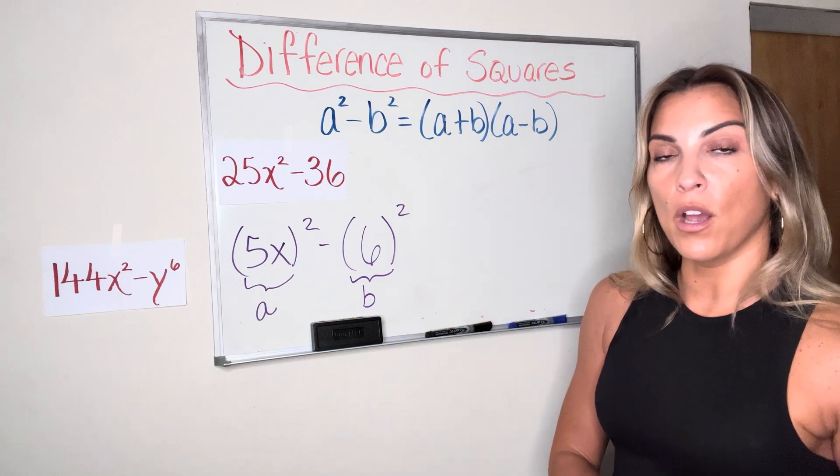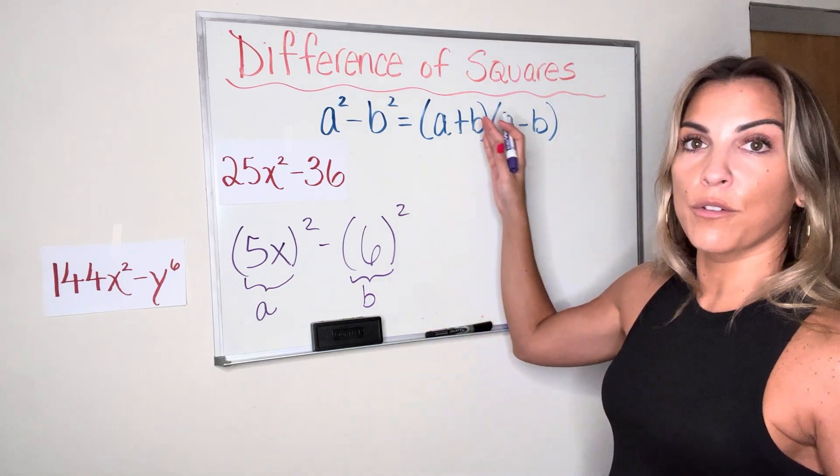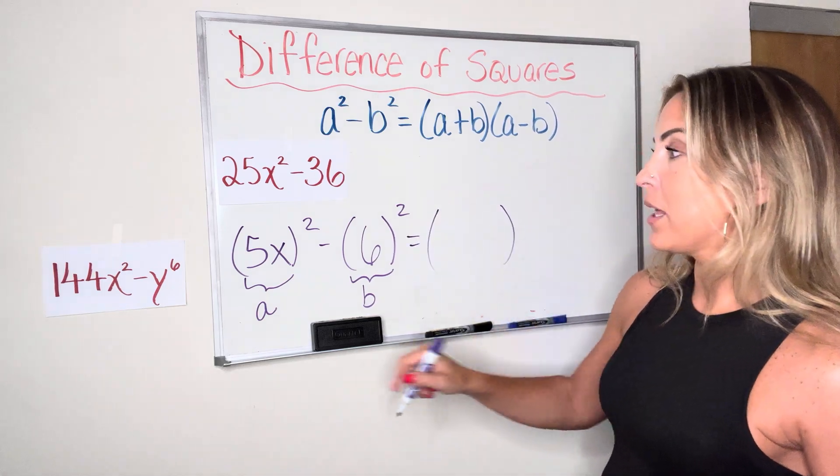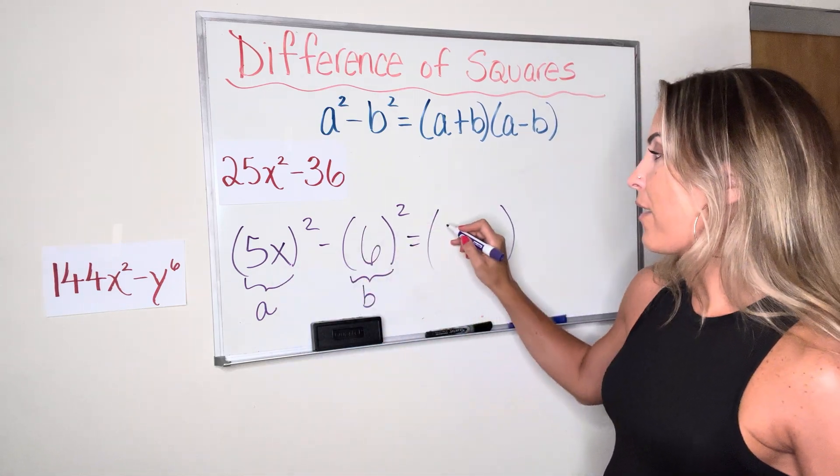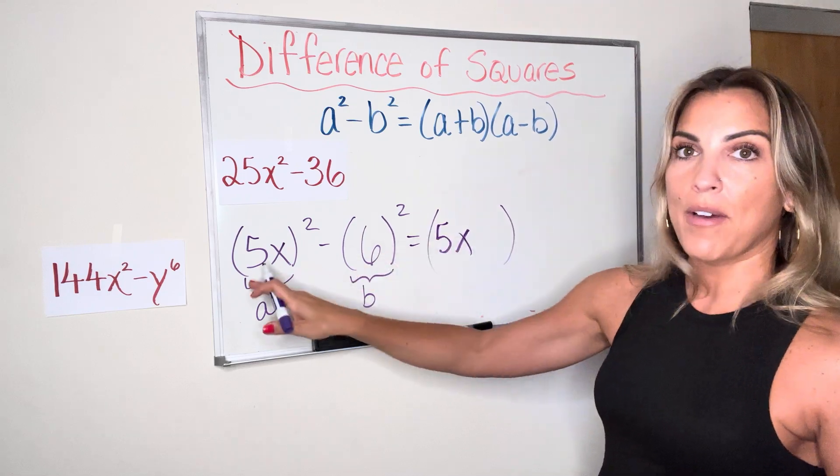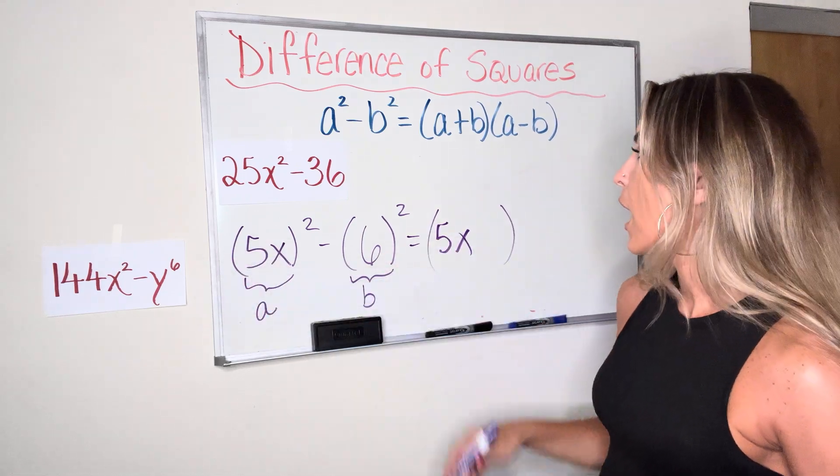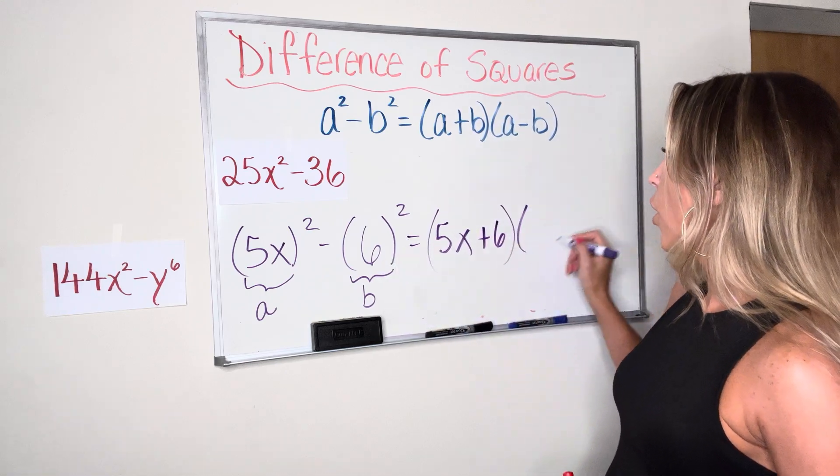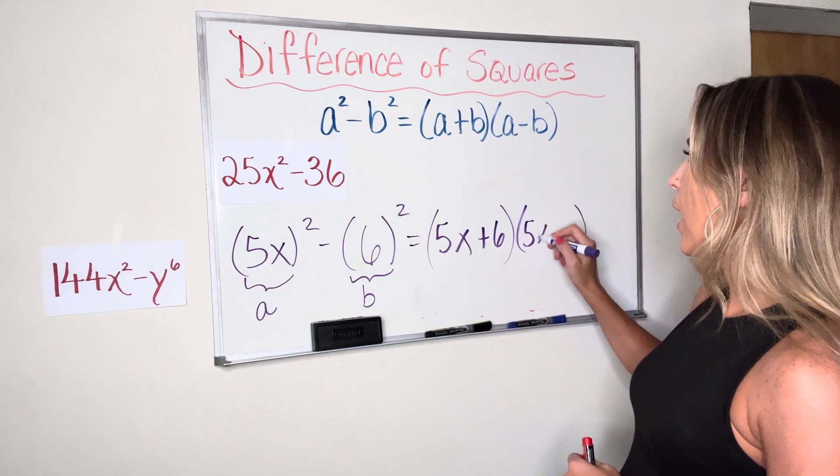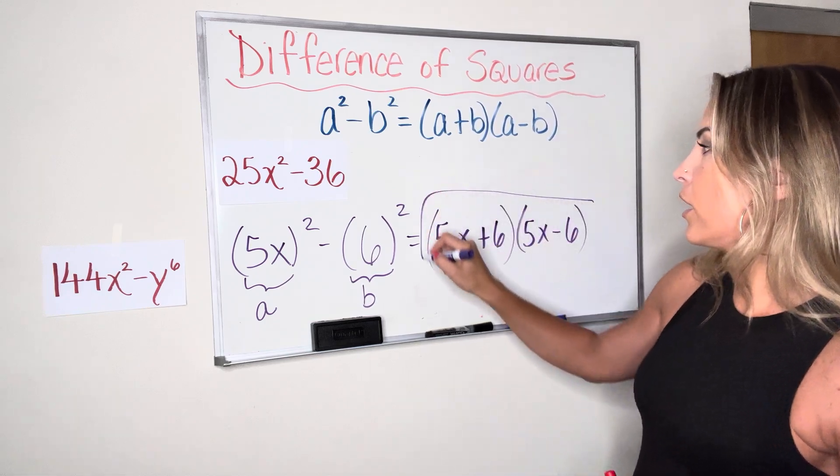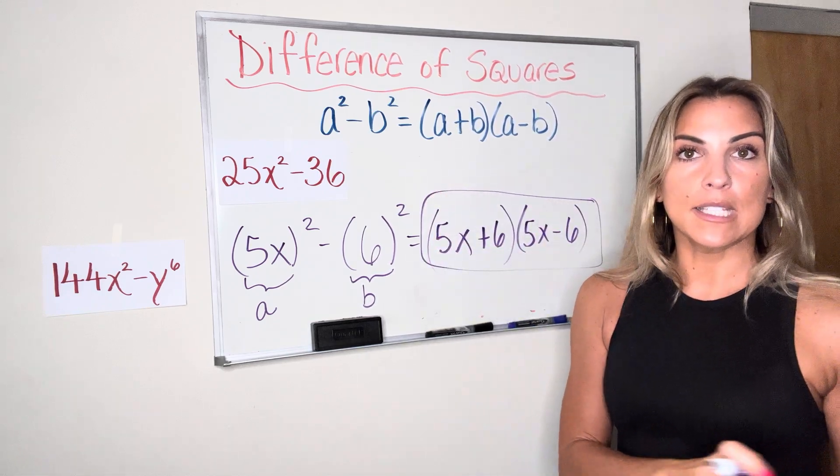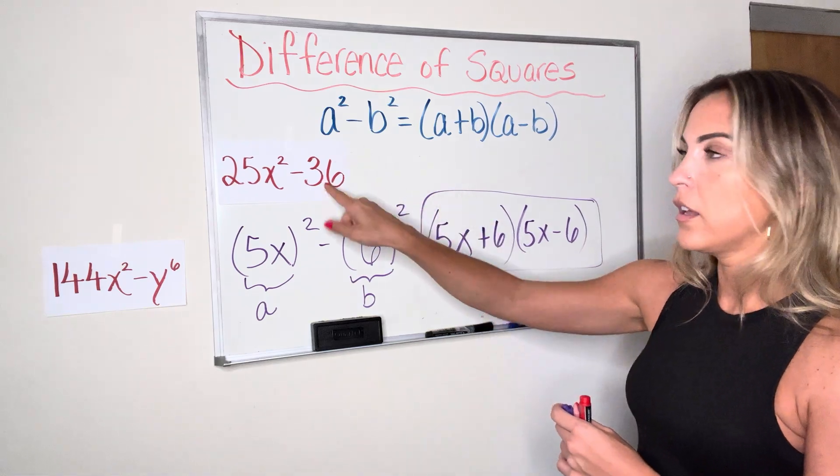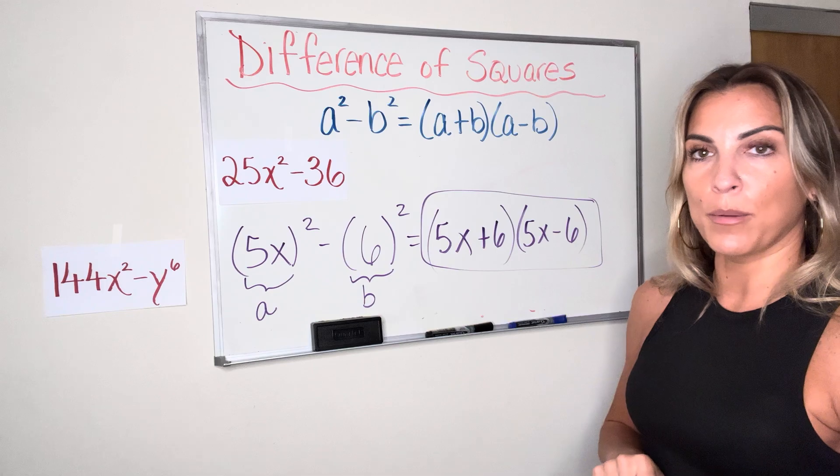So again, once you've identified what your A and B are, it's just a matter of plugging into the formula, substituting in. So the formula says that I'm writing A plus B. So A is 5x, right? I had to square that whole thing, 5x, not just the 5, not just the x. Plus my B, which is 6. Open a second parenthesis, and now I'm doing A minus B. So here's my answer. 5x plus 6 times 5x minus 6. Using the difference of squares formula, that's how I factor my red problem.